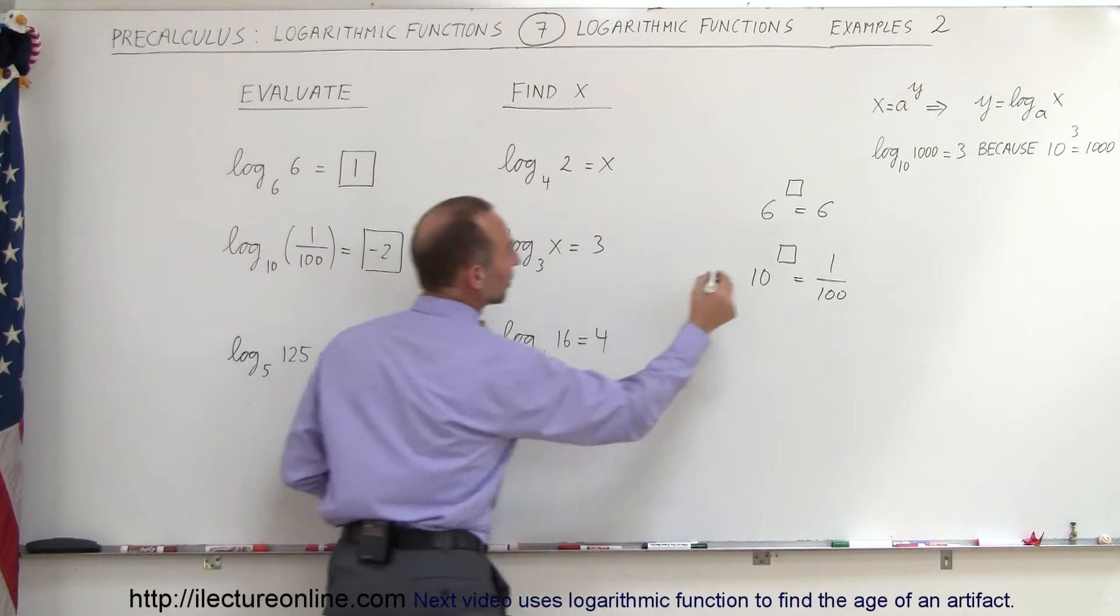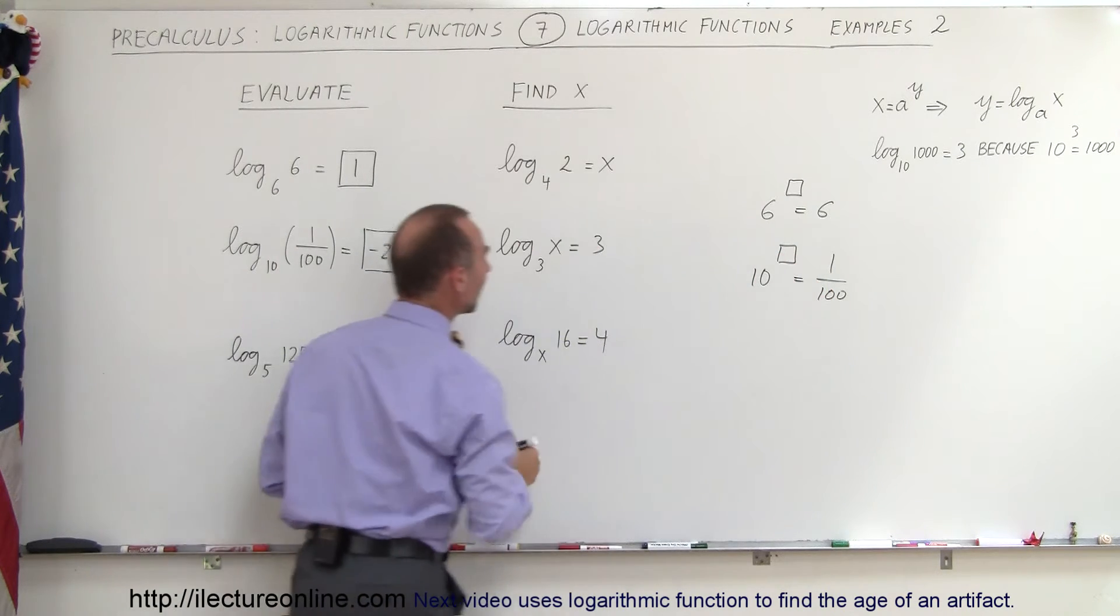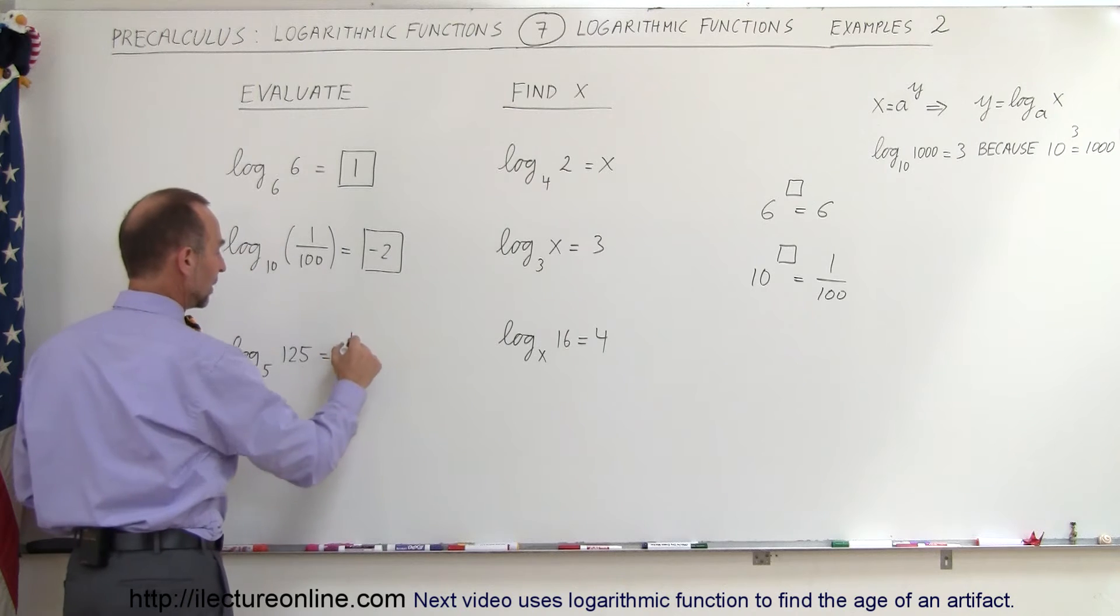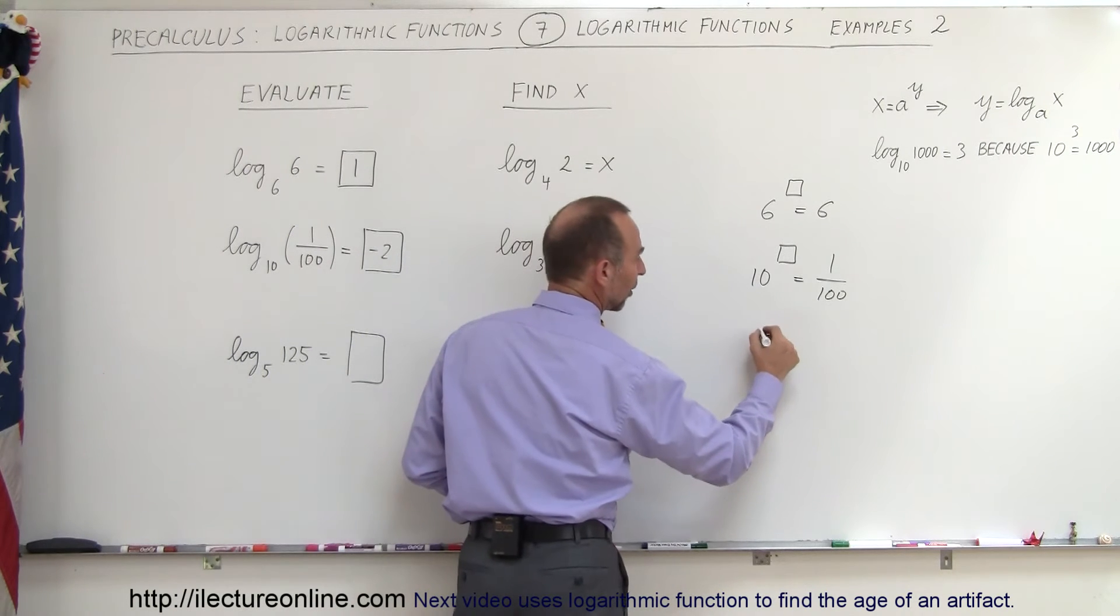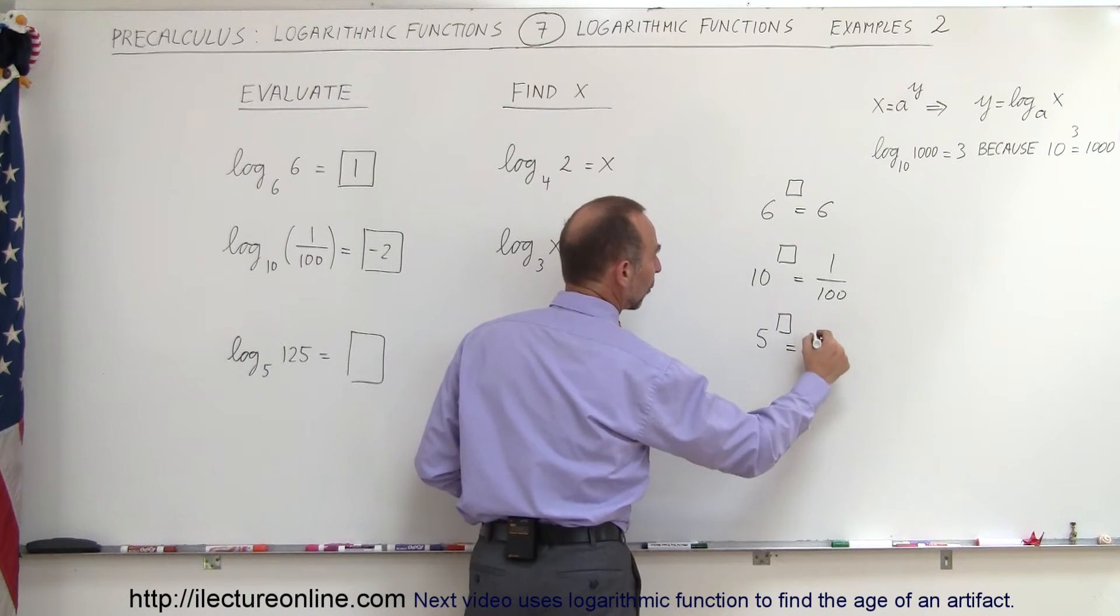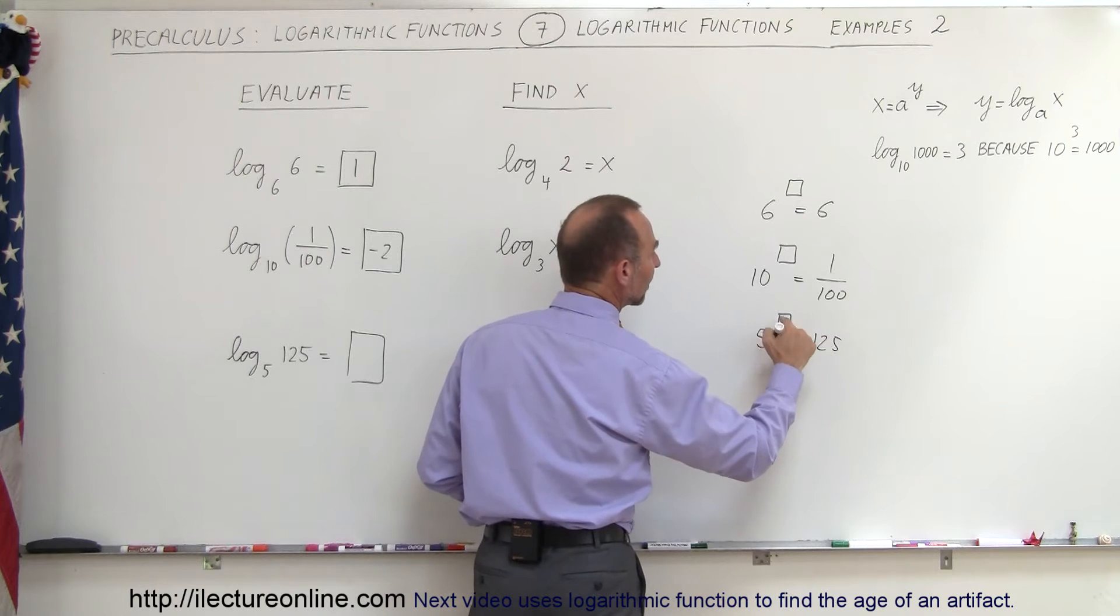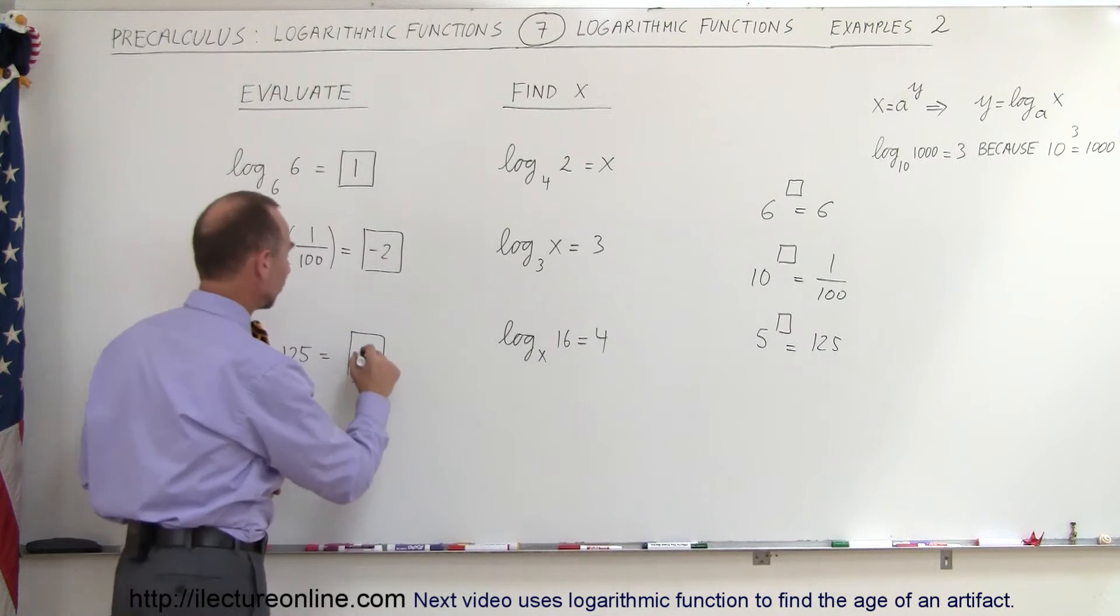All right, and finally again we need a box here. We're looking for some number so that we take the base, raise to this number, we get 125. So we take the base, raise it to this number, we get 125. That needs to be the number 3, and so this becomes 3.